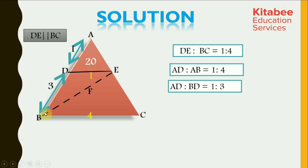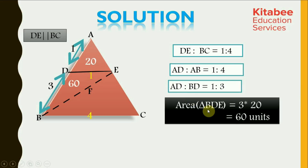If we consider the triangle ABE, DE is a line which divides AB in the ratio of 1 is to 3. So if the base is divided in the ratio of 1 is to 3, then the areas must also be in the ratio of 1 is to 3. Thus, area of triangle BDE should be three times the area of triangle ADE, so it comes out to be equal to 60 units. Area of triangle BDE is equal to 60 units.